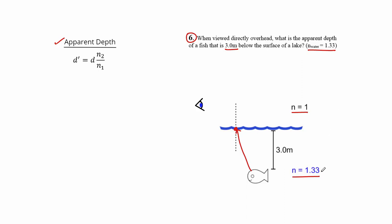In this case, we're going from a higher index of refraction to a lower index of refraction. As a result, your angle is going to get bigger. It's going to bend away from the normal, here going towards the observer's eyes.